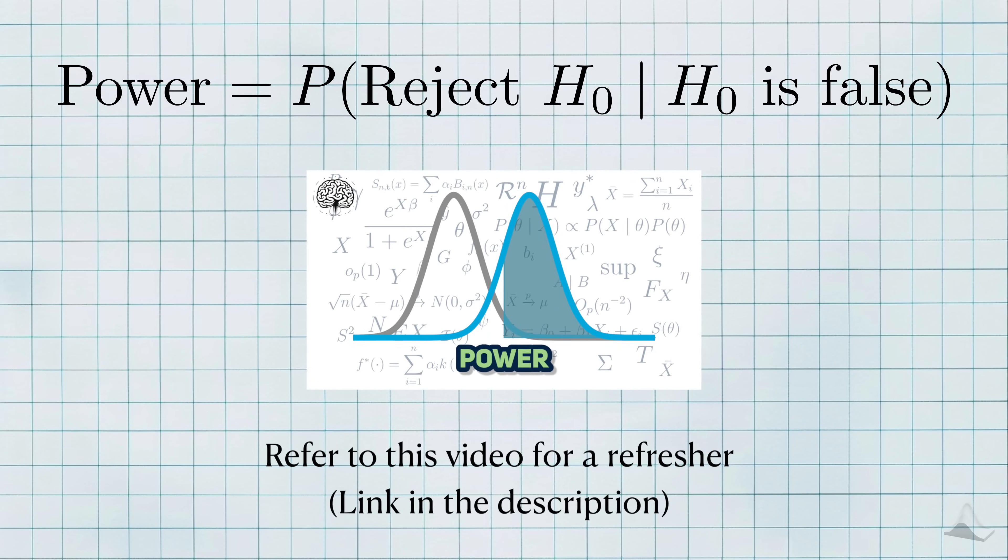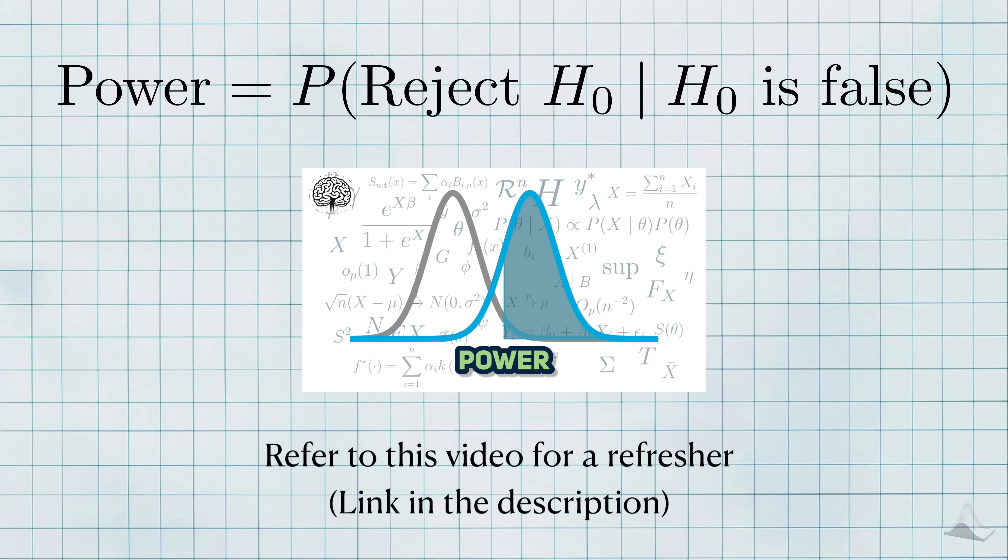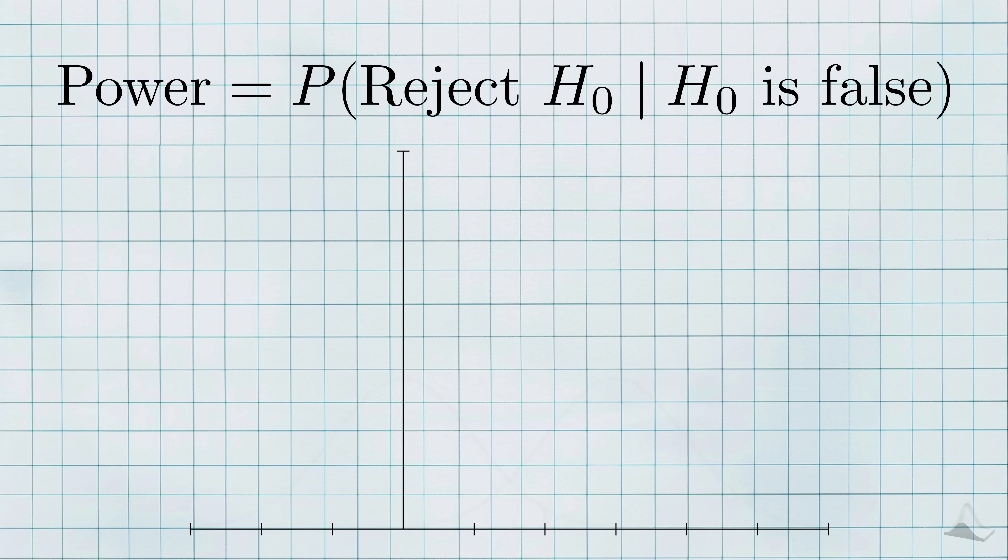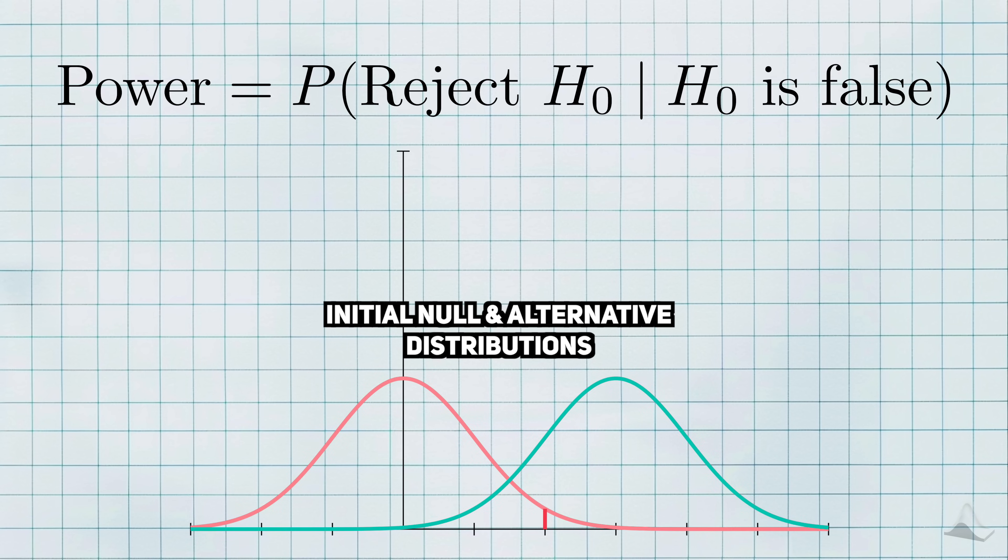Power is the probability that we will reject the null hypothesis given that the null is not true. For a more detailed explanation, go watch my power explainer video and help you boy out. In that video, we saw that more sample size increases power.